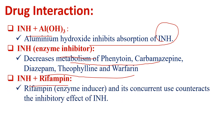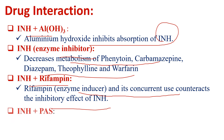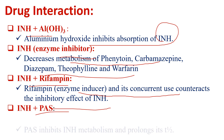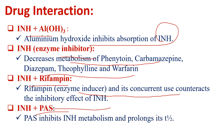If isoniazid is given with rifampin, rifampin acts as an enzyme inducer and its concurrent use counteracts the inhibitory effect of INH — meaning INH and rifampin act against each other in terms of metabolism. When INH is given with para-aminosalicylic acid, para-aminosalicylic acid inhibits INH metabolism and prolongs the half-life of isoniazid. These are the important drug interactions of isoniazid.